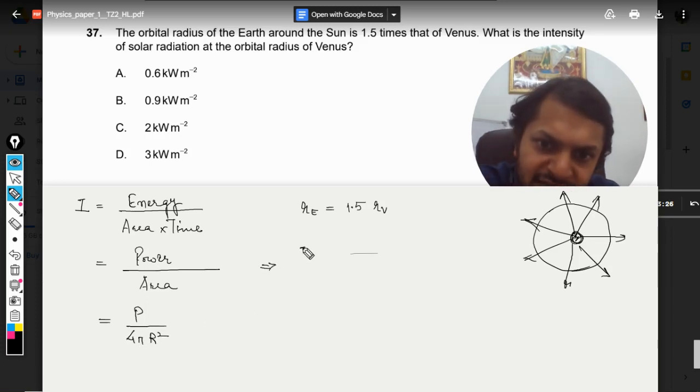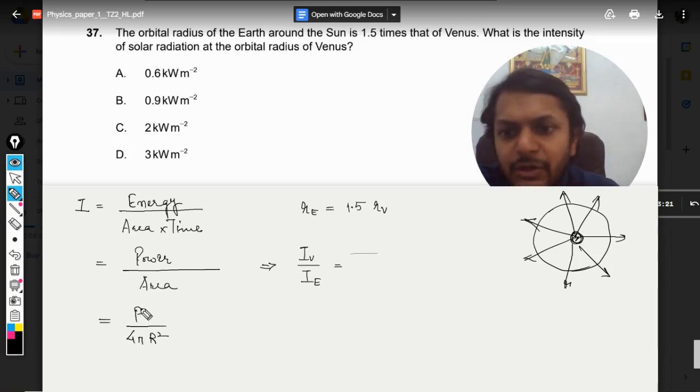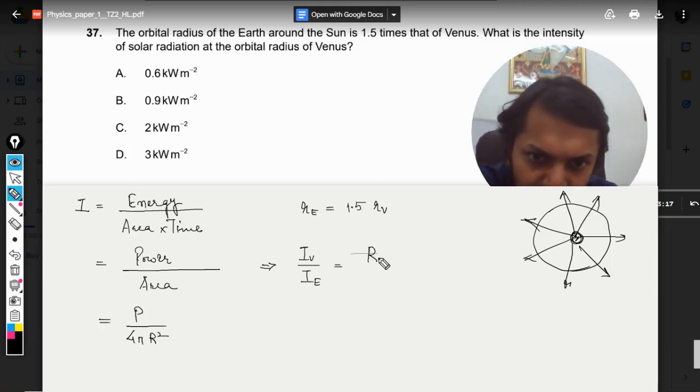From this, I can say that intensity at Venus divided by intensity on Earth—because P/4π is a constant—will come out to be (r_e/r_v)².